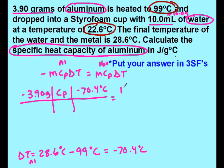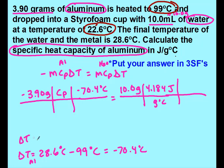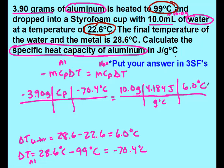On the other side, my water: mass of water was 10 grams, specific heat of water in joules is 4.184, and my delta T for water is final 28.6 minus initial 22.6, giving a difference of 6 degrees Celsius. So now I just plug in everything on the right: 10 × 4.184 × 6 gives me 251.04.